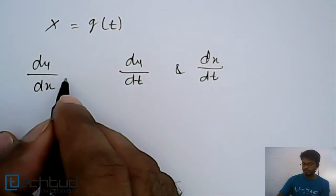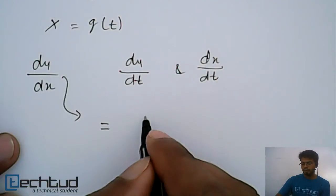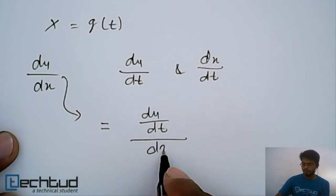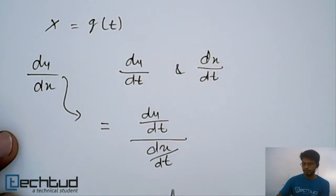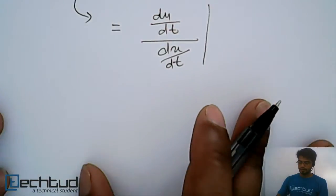And now what will be the value of dy/dx? This dy/dx will be equal to dy/dt upon dx/dt. So likewise, we can find and proceed. Let's take an example.